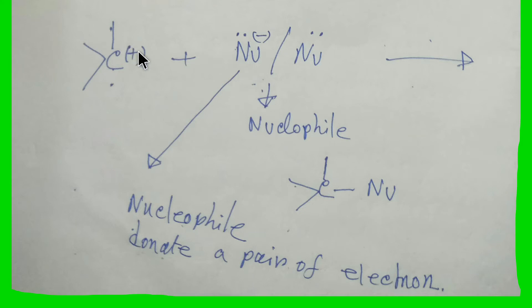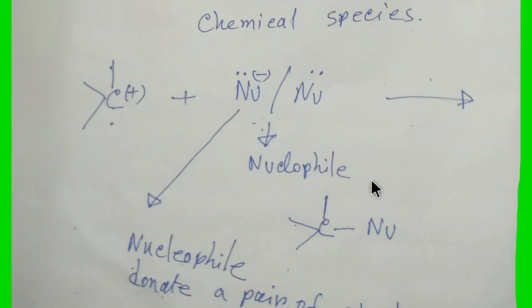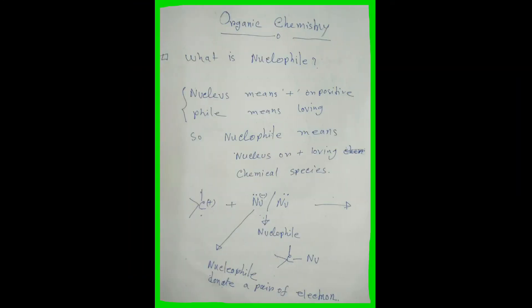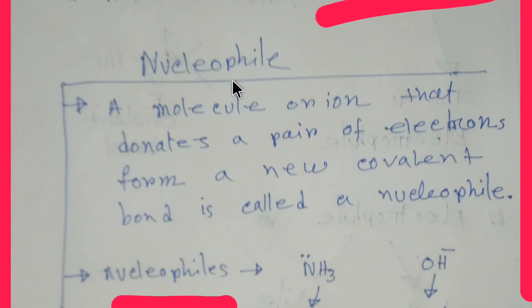Every nucleophile is a Lewis base. A Lewis base is a molecular species that can donate a pair of electrons. The electrophile, on the other hand, is taking electrons from the nucleophile. So I hope nucleophile is clear to you. Here is the full definition: a nucleophile is an atom or ion that donates a pair of electrons to form a new covalent bond.